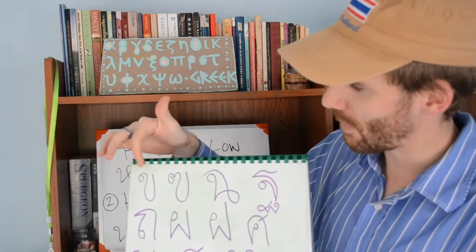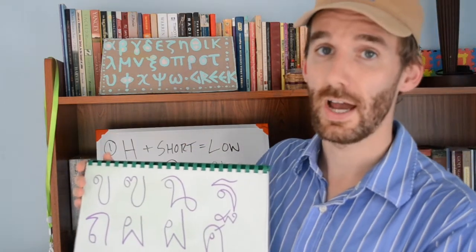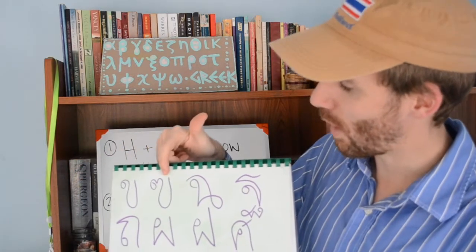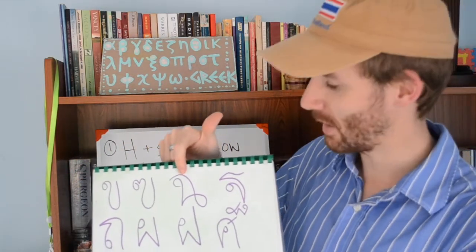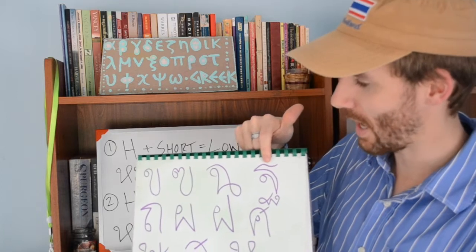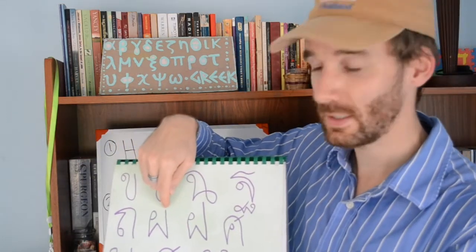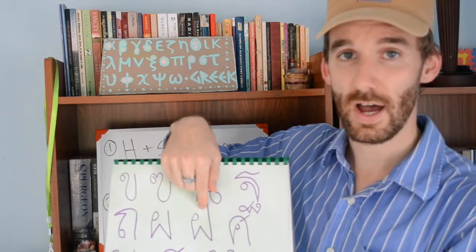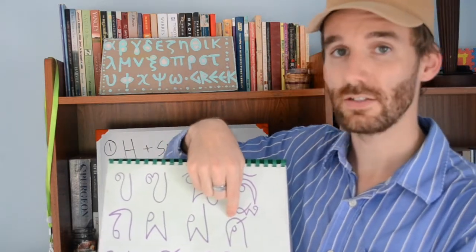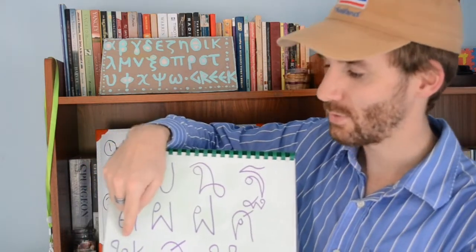The first letter here is ขอข่าย, ขอขวด, ขอชิง, ขอทาน, ขอทุง, ขอพึง, ขอฟา, ขอสาลา, ขอรือสี.